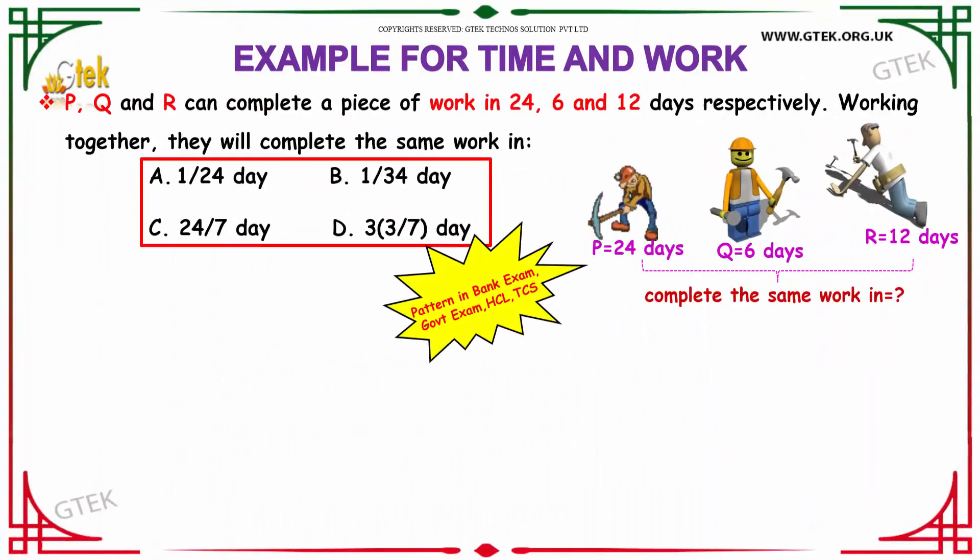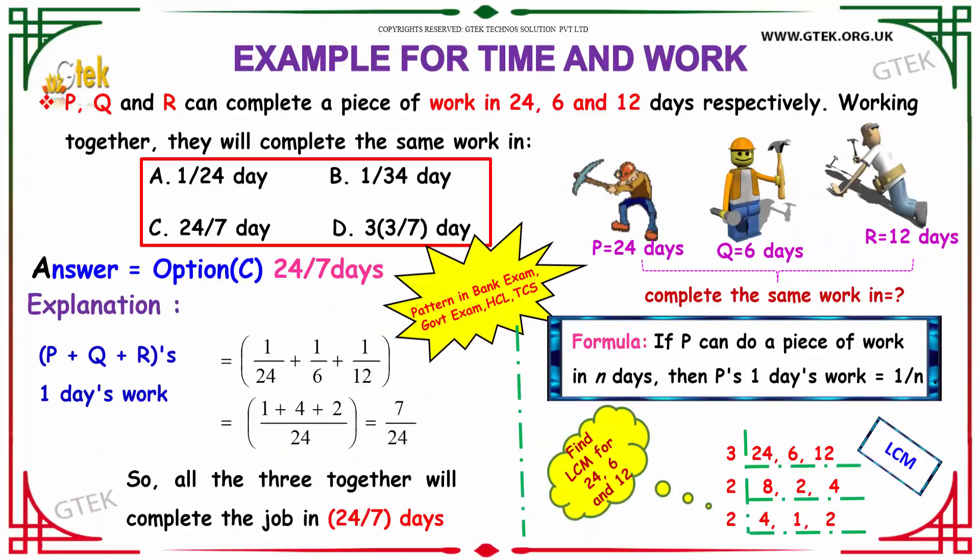Let us see how to apply this logic to solve the sum. We know that P, Q and R can complete a piece of work in 24, 6 and 12 days. That is, P's one day work will be 1 by 24 and Q's one day work will be 1 by 6, R's one day work will be 1 by 12.